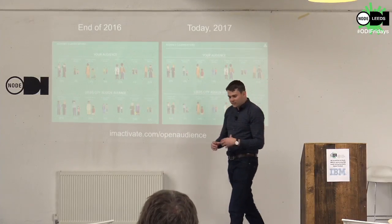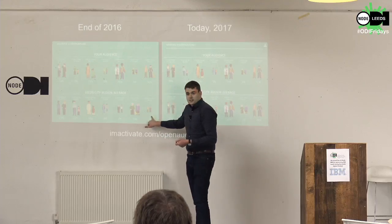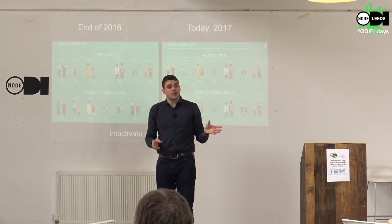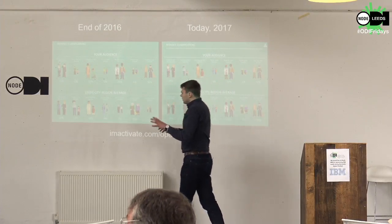We have a tool called Open Audience which is built on open data itself. It accepts as input a list of output areas, which I share from the app — I paste in 87,000 output areas for all of our individual users — and I start getting back demographic information. At the end of 2016, we found that wealthy older people were really overrepresented in users of the app: 4% of people in Leeds are of that group, but 16% of our app users were.